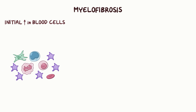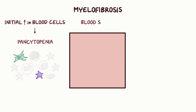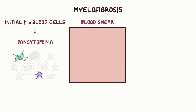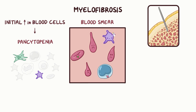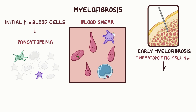In myelofibrosis, there's typically an initial increase in blood cells, particularly platelets, but eventually those levels drop as there's pancytopenia. A blood smear will show abnormal tear-drop shaped red blood cells, immature nucleated red blood cells, and immature white blood cells and platelets. A bone marrow biopsy can show an increase in hematopoietic cell numbers in early myelofibrosis, or a decrease in hematopoietic cell numbers and fibrosis later in the process.